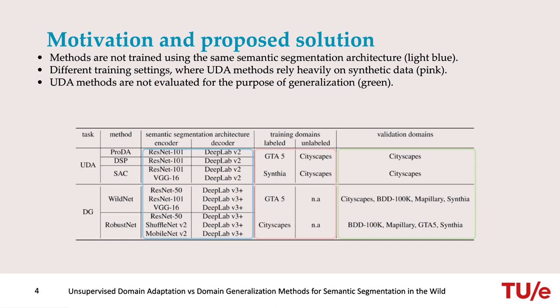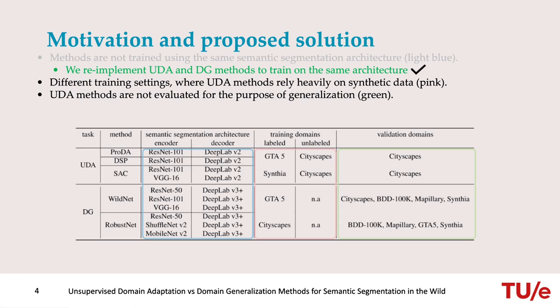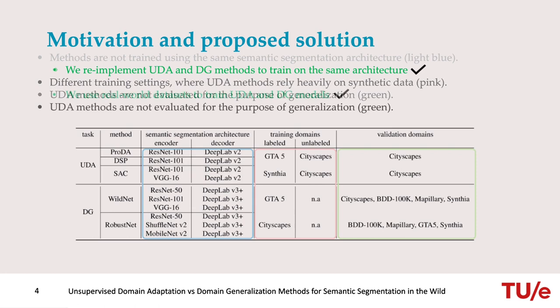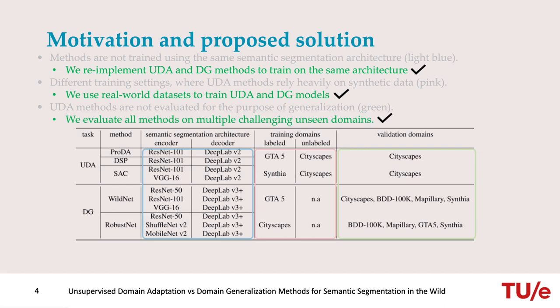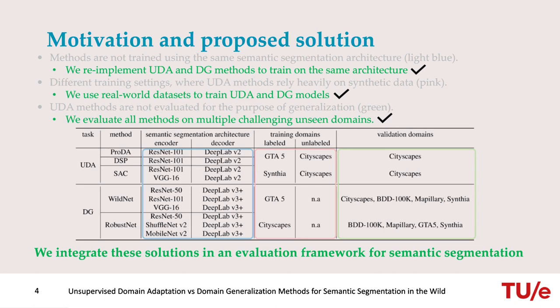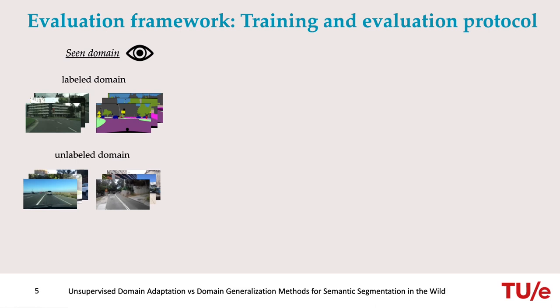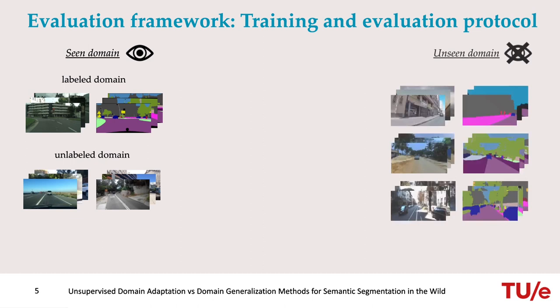In this work, we propose to reimplement state-of-the-art unsupervised domain adaptation and domain generalization methods to train on the same architecture, using real-world labeled and unlabeled datasets, and more importantly, evaluating the resulting models on multiple challenging domains never seen during training. Our evaluation framework proposes different datasets for the labeled and unlabeled domains used during training, and assigns multiple challenging datasets to the unseen domain, used only for evaluation and never accessed during training.